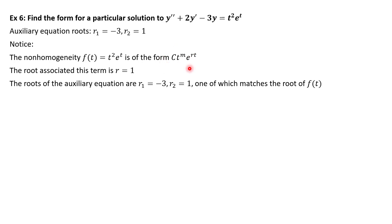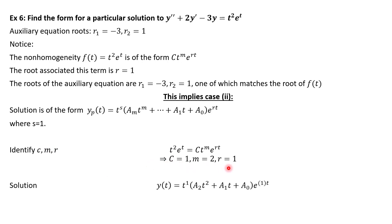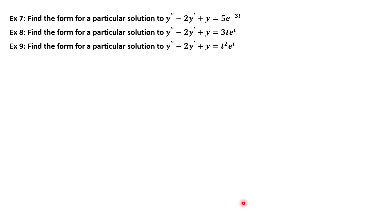Example 6: the non-homogeneity is t²·e^t, so r = 1 again, which matches one of our auxiliary roots — case 2 again. Identifying m = 2, r = 1, and with s = 1, the format of our answer has a₂t² + a₁t + a₀ decreasing from m = 2 down to 0, giving us our final answer.